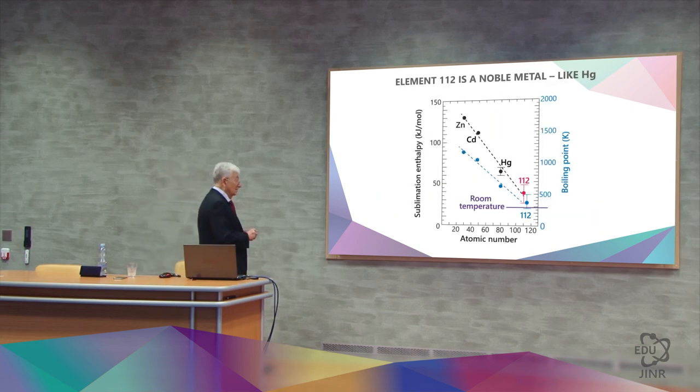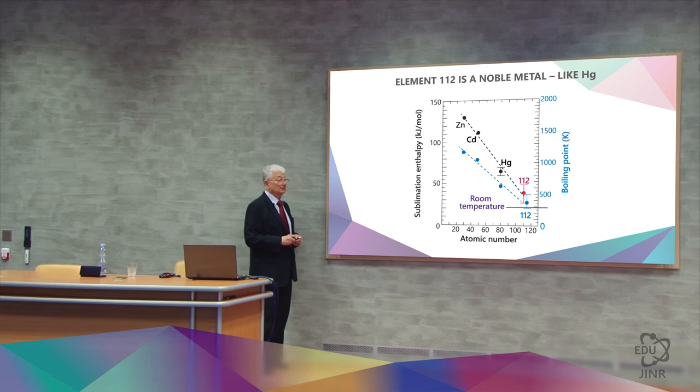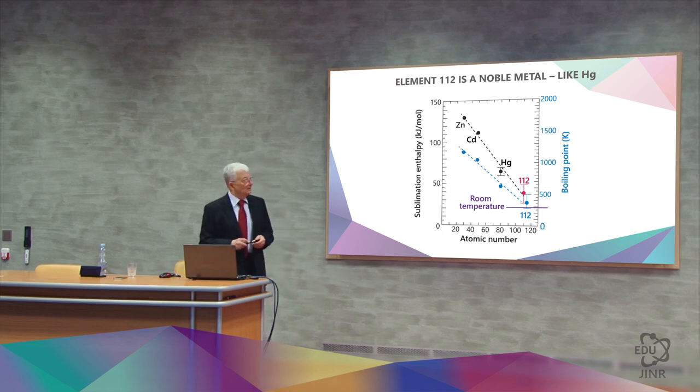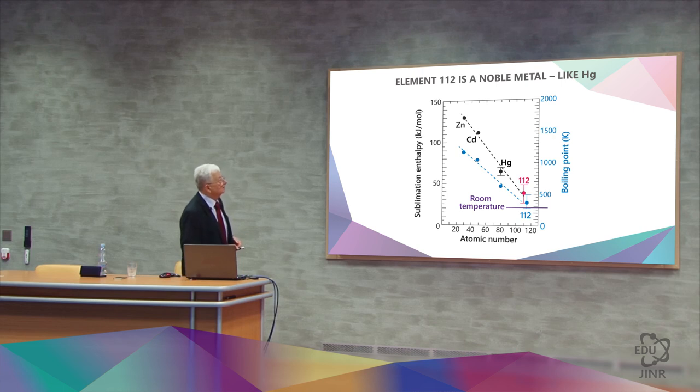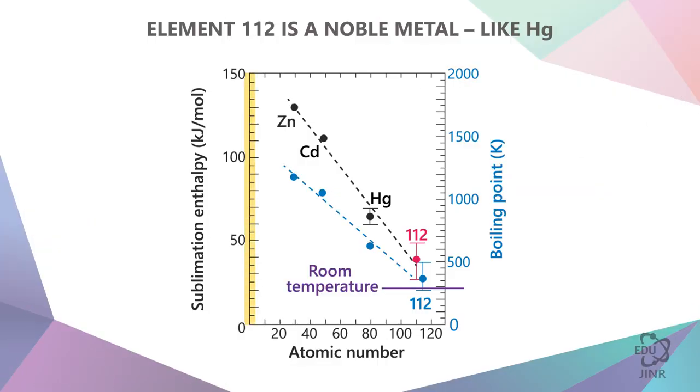When we know the distribution of atoms along the surface of gold, we can find the heat of absorption, and from the heat of absorption, we can calculate the heat of sublimation. From the heat of sublimation, which looks like this column and falls in the 12th period of the periodic table.